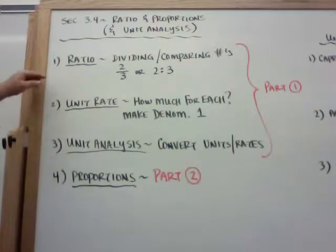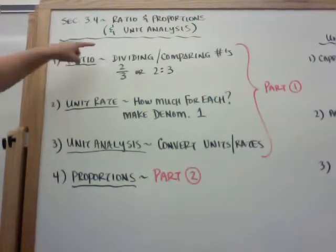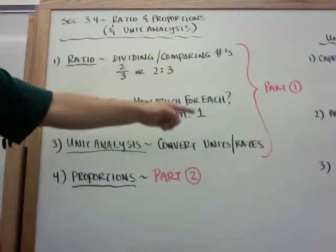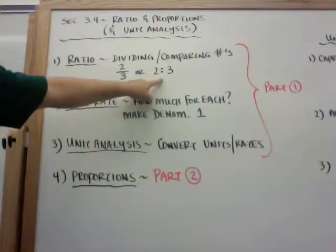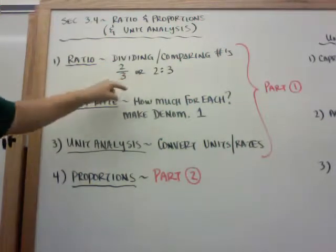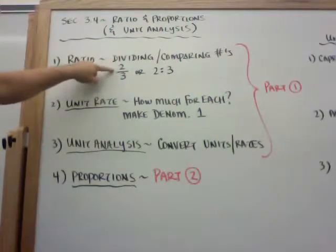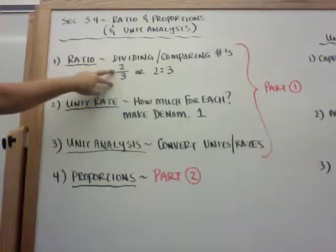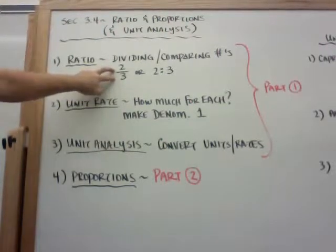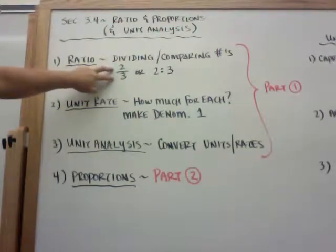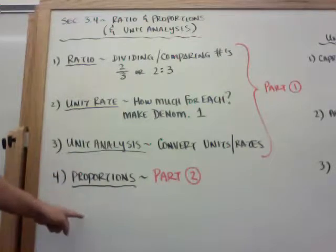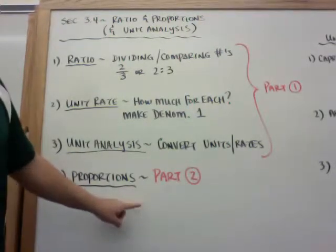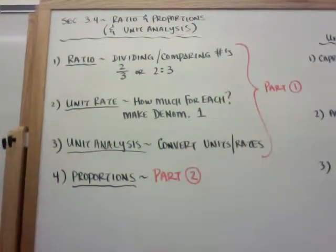Okay, so part 1: a ratio is when you divide or compare any two numbers. So you can go 2 over 3, or 2 to 3 like how we did for the odds. Whenever you're dividing it — so 2 divided by 3 — another word for a ratio is fraction. So a ratio is one fraction by itself. A proportion is going to be a ratio equal to another ratio, or a fraction equal to another fraction.